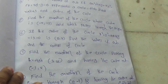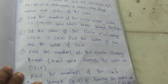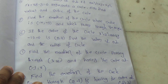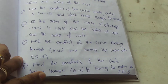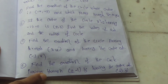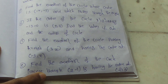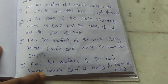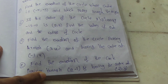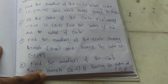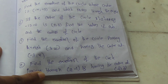Seventh question: Find the equation of the circle passing through (3, 4) and having the center at (minus 3, 4). Eighth question: Find the equation of the circle passing through (2, minus 1) and having the center at (2, 3). Note: Questions five to eight are the same model.